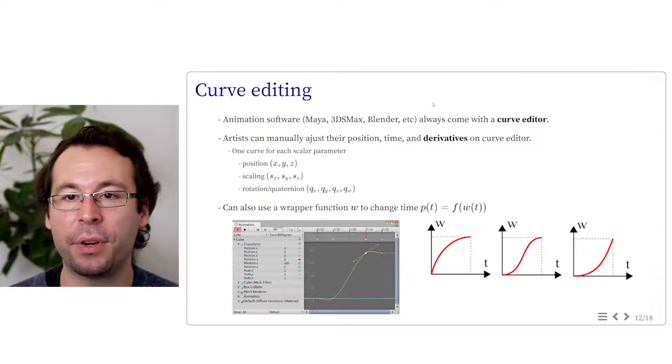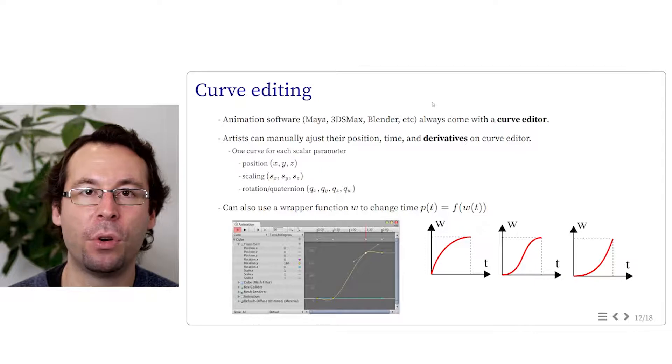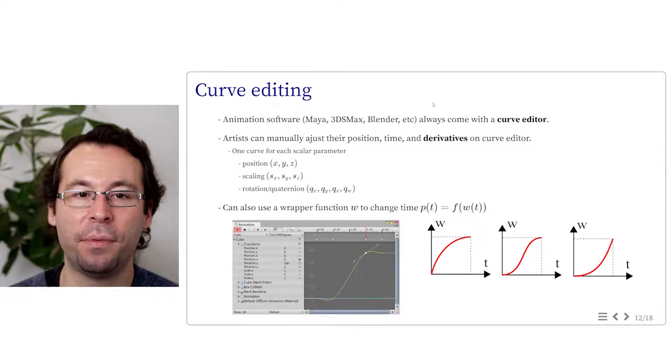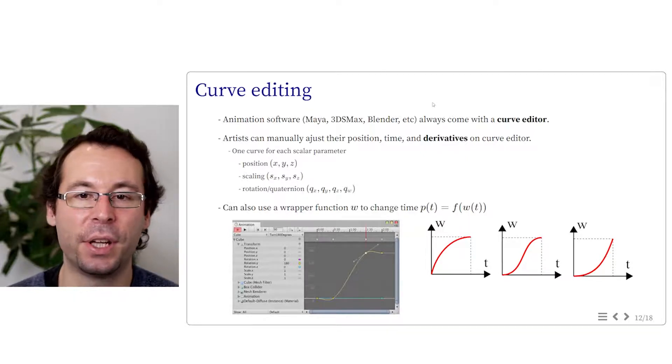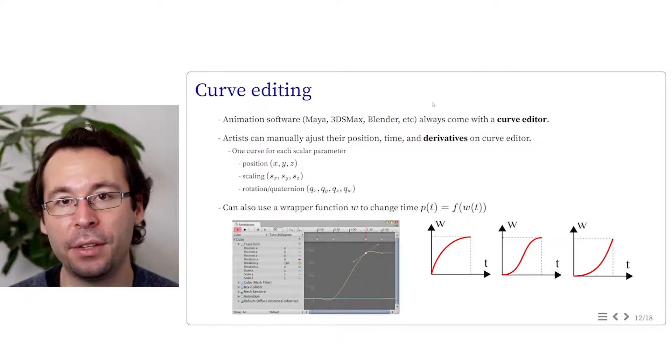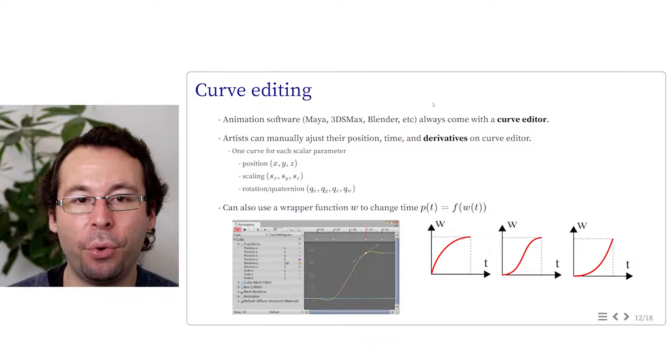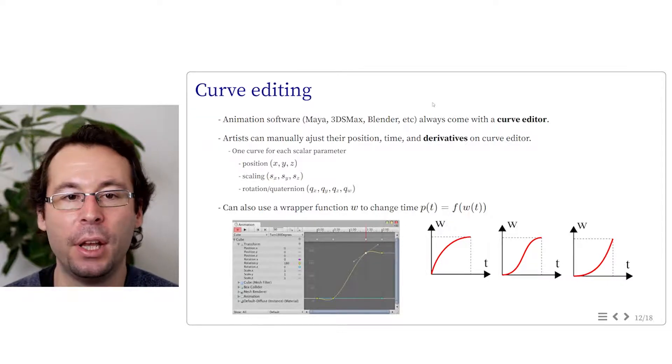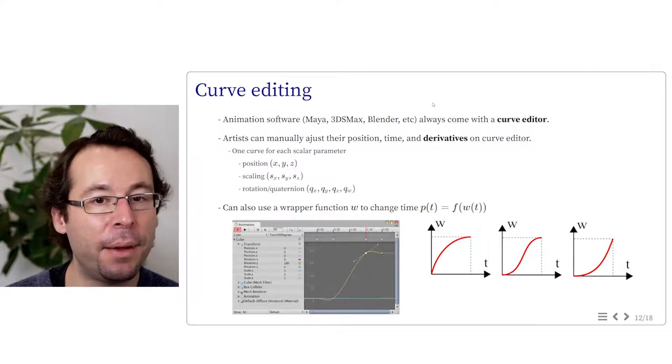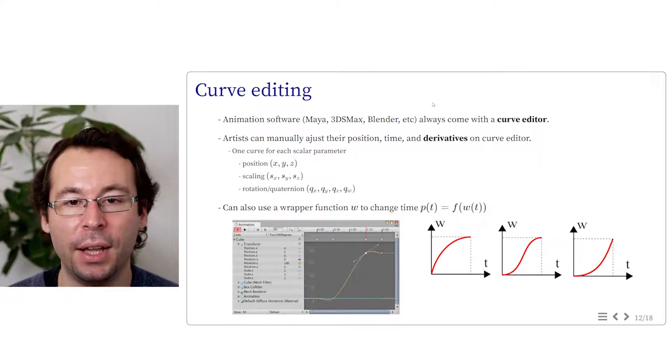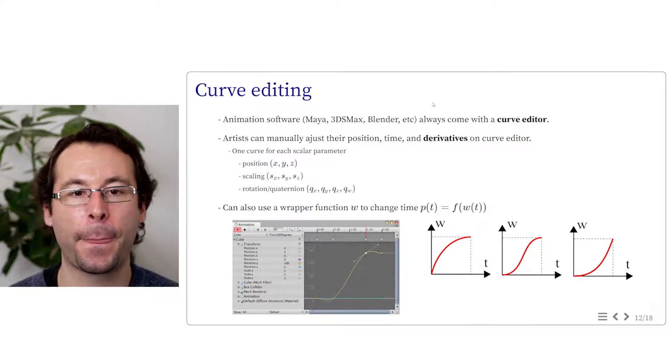Finally, all standard animation software such as Maya, 3ds Max, Blender and so on always come with something called a curve editor. This is an interface where you can see the evolution of your interpolated positions along time. You can typically see that you can adjust not only the position but also the derivatives at the key points. This curve can only display one variable, so you have three curves for the X, Y and Z component. But you also have curves for the other degrees of freedom for an object, such as the evolution of the scaling parameters or the degrees of freedom of rotation components, like the components of quaternions or Euler angles.